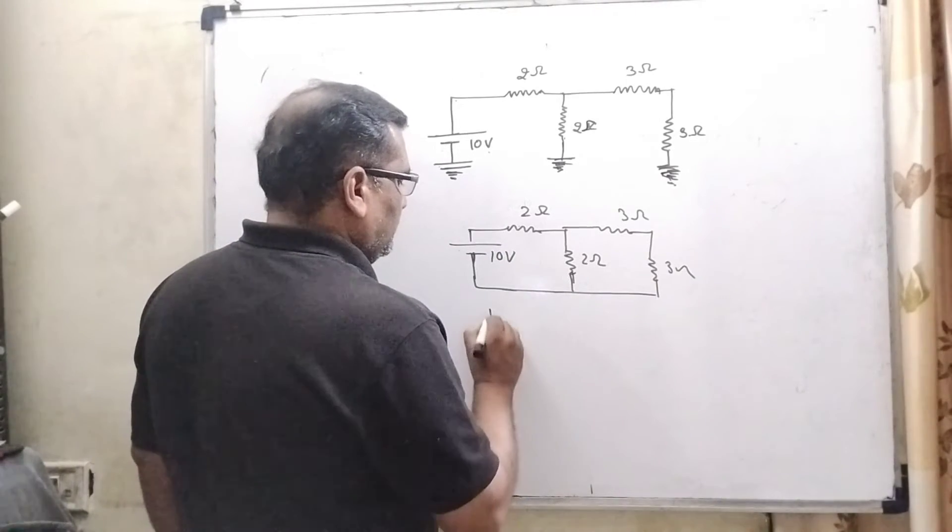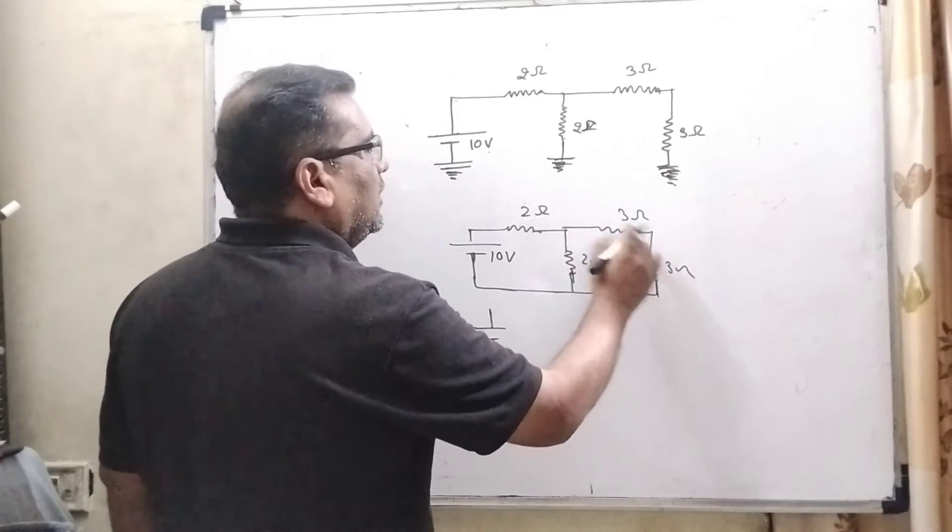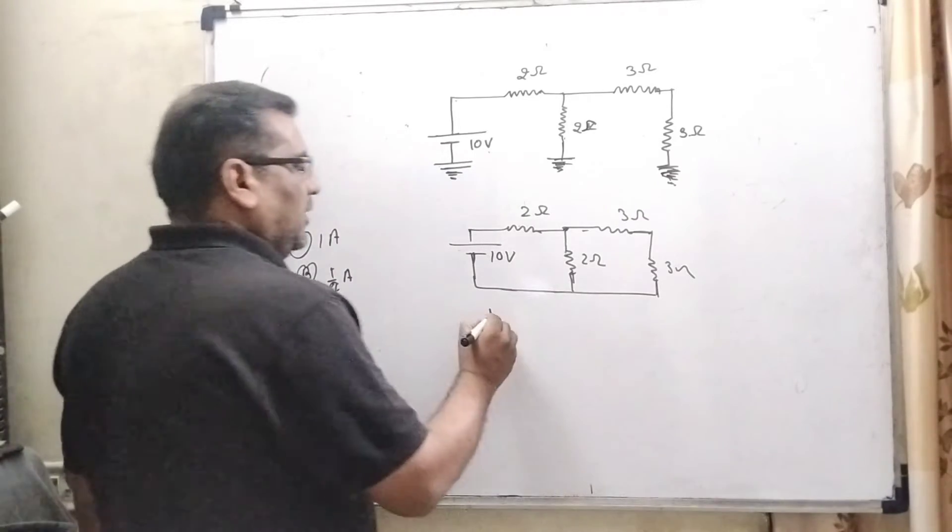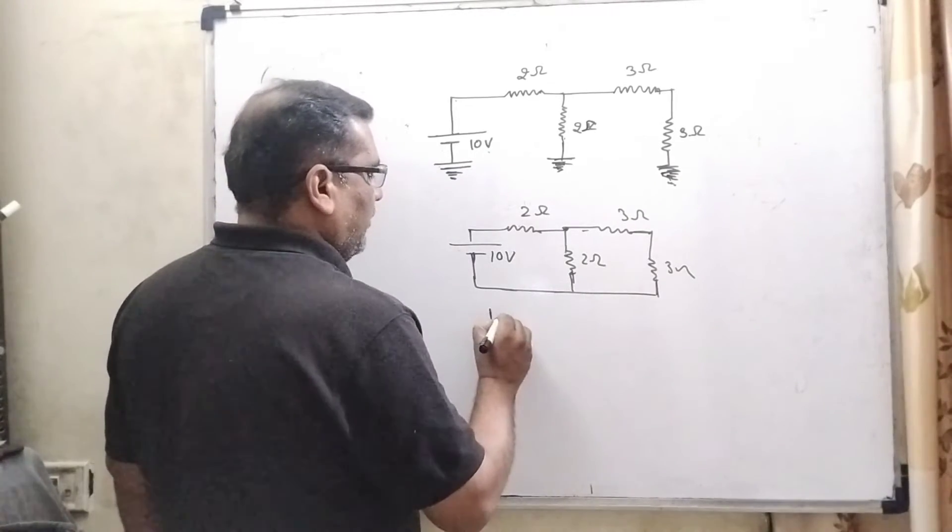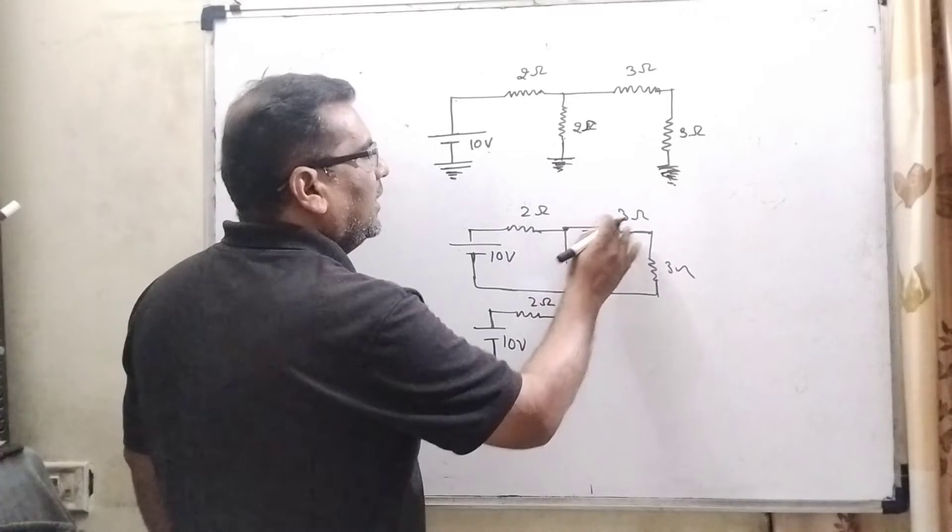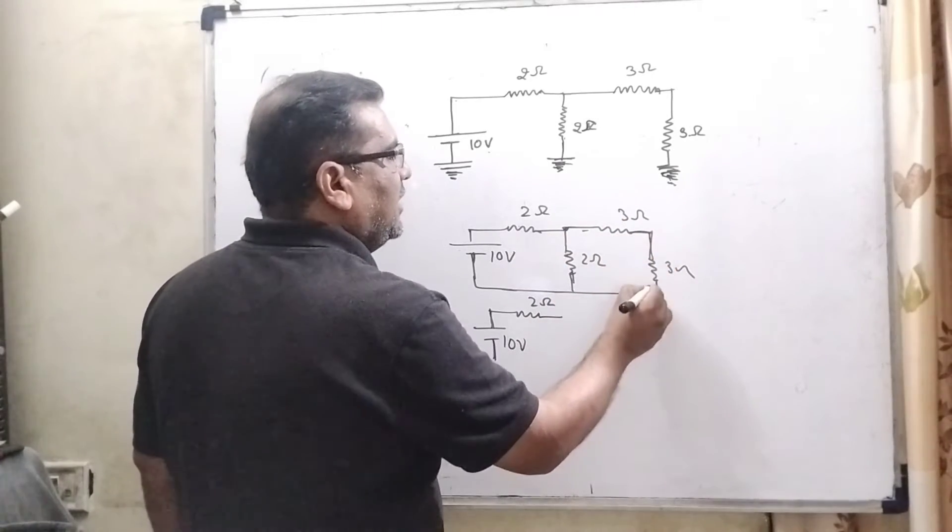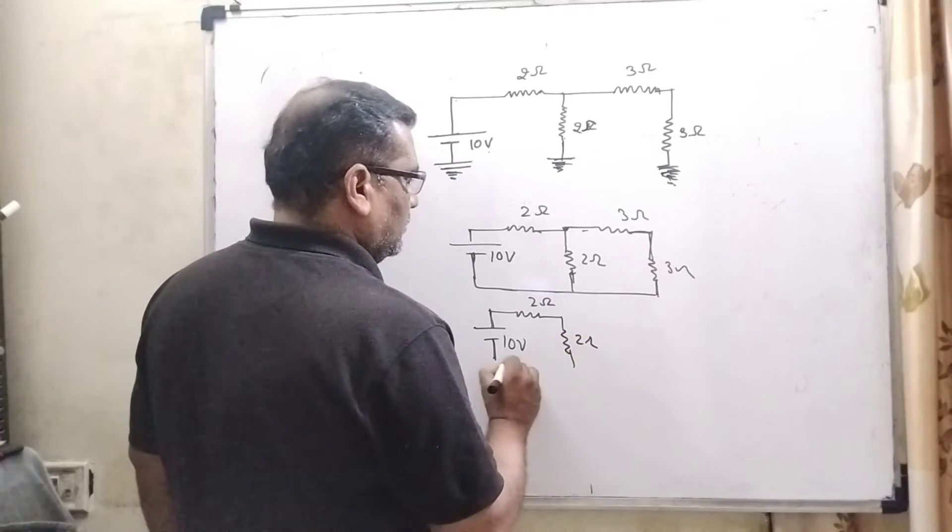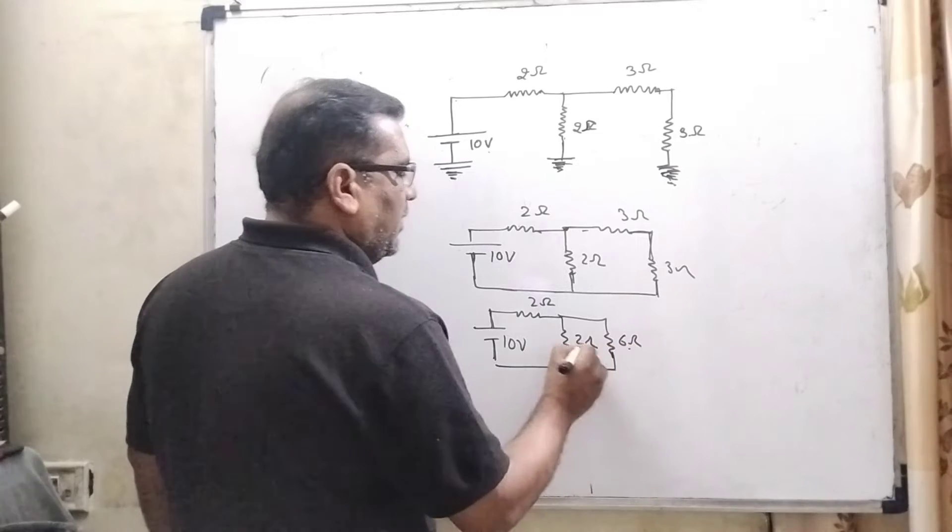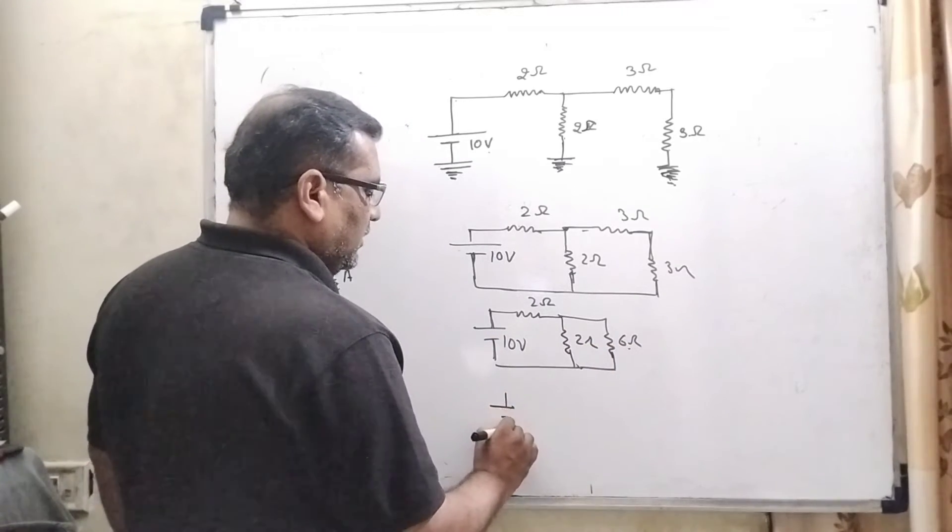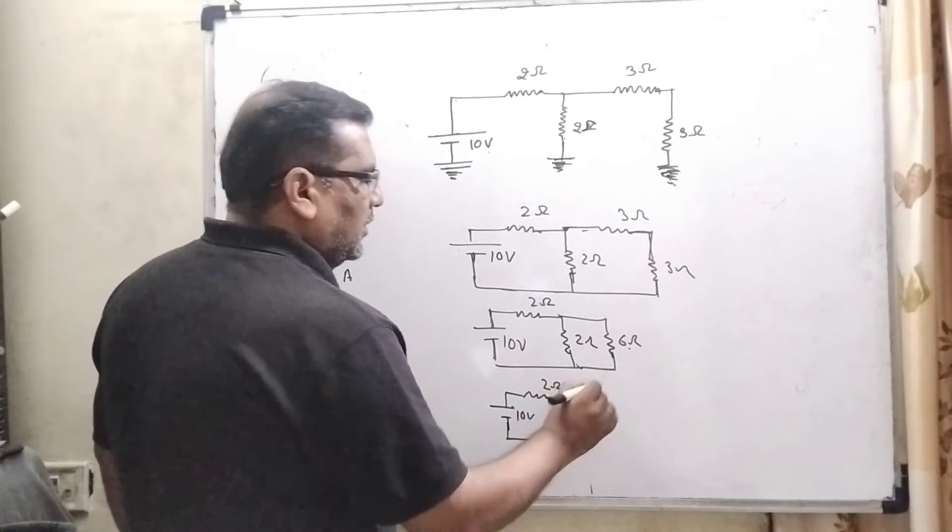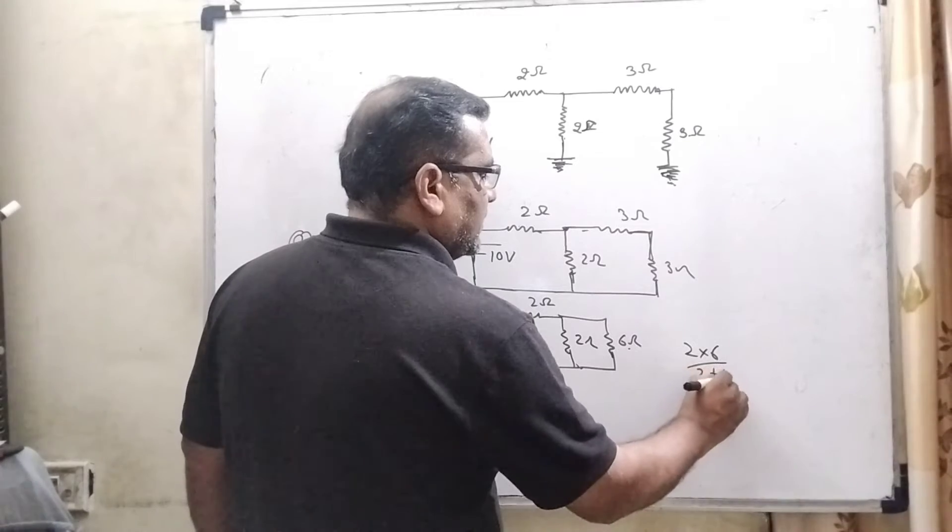So here, what we have to calculate - we have to find out the current, amount of current which is passing through 3 ohm resistance. So here, first of all, we have calculated net current. So here 2 ohm resistance, here 3 ohm and 3 ohm are in series. So therefore, it becomes 6 ohm. Now 6 ohm and 2 ohm are parallel. So therefore, we have to calculate 2 into 6, 2 plus 6.